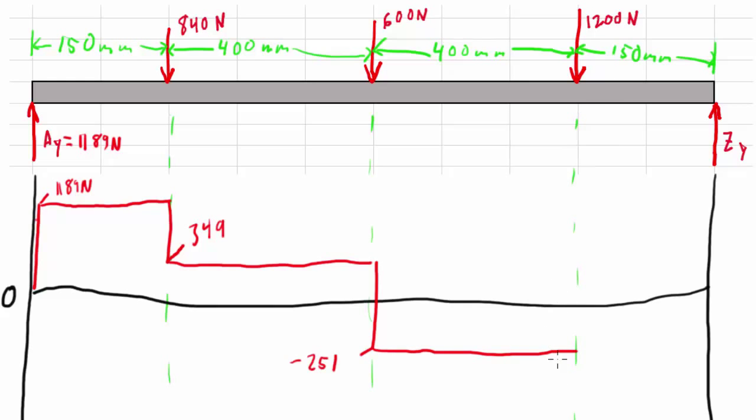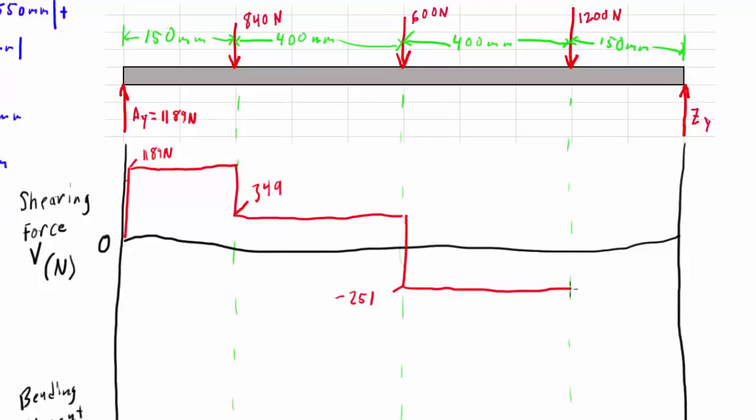What's happening here? 1200 Newtons down. Okay, to what level? So negative 251 minus 1200 would make it 1451. And then nothing's happening here, so we have a flat line right there.